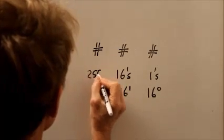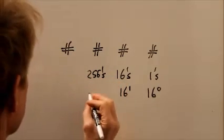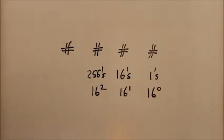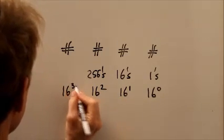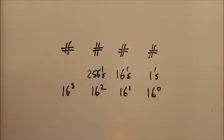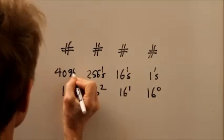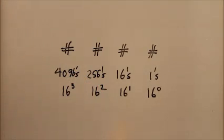The next one is 16 cubed, or 256 times 16. That works out to 4096's place. Well, we've got a simple situation here because we only have two digits to deal with, one and zero.